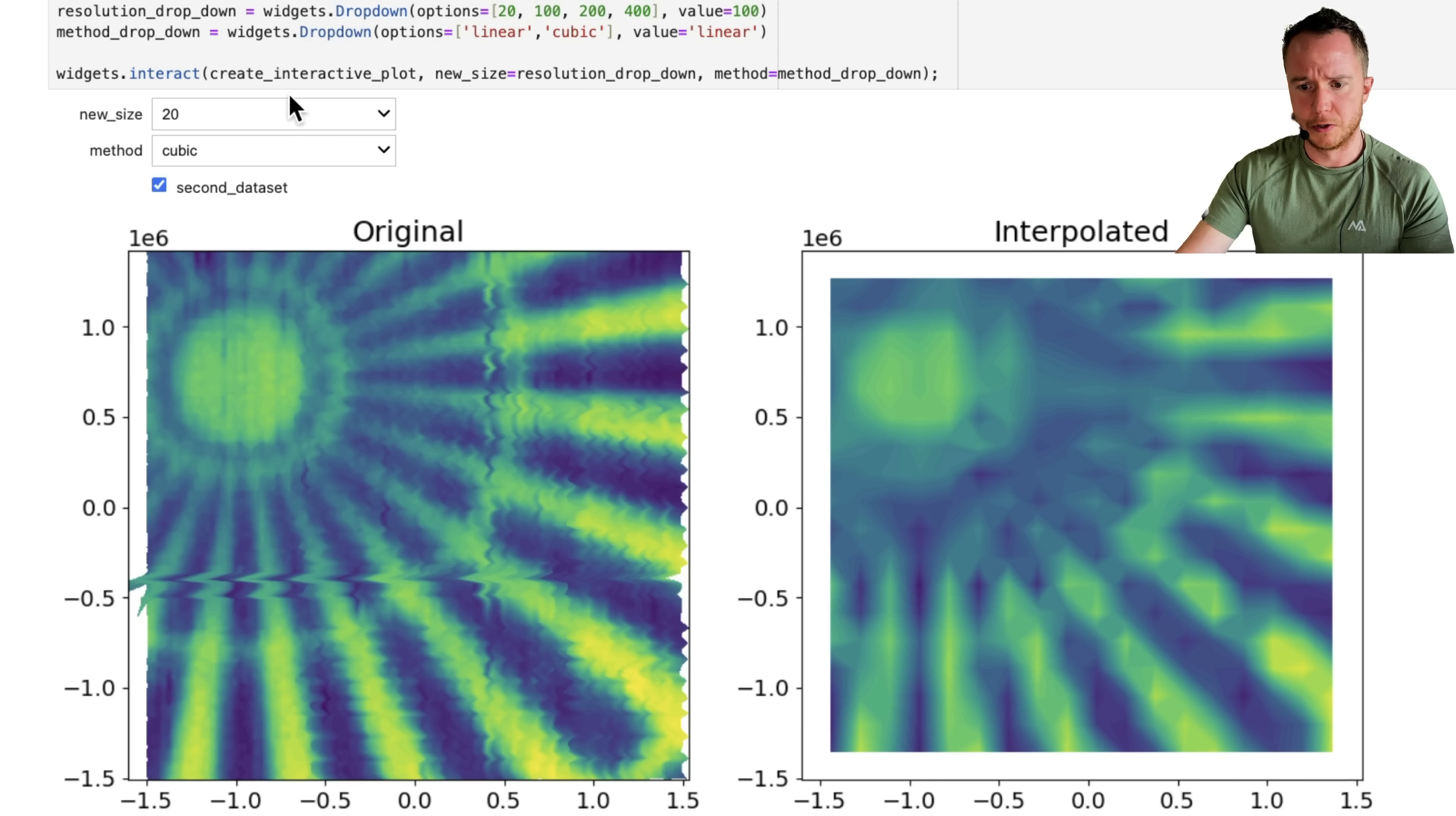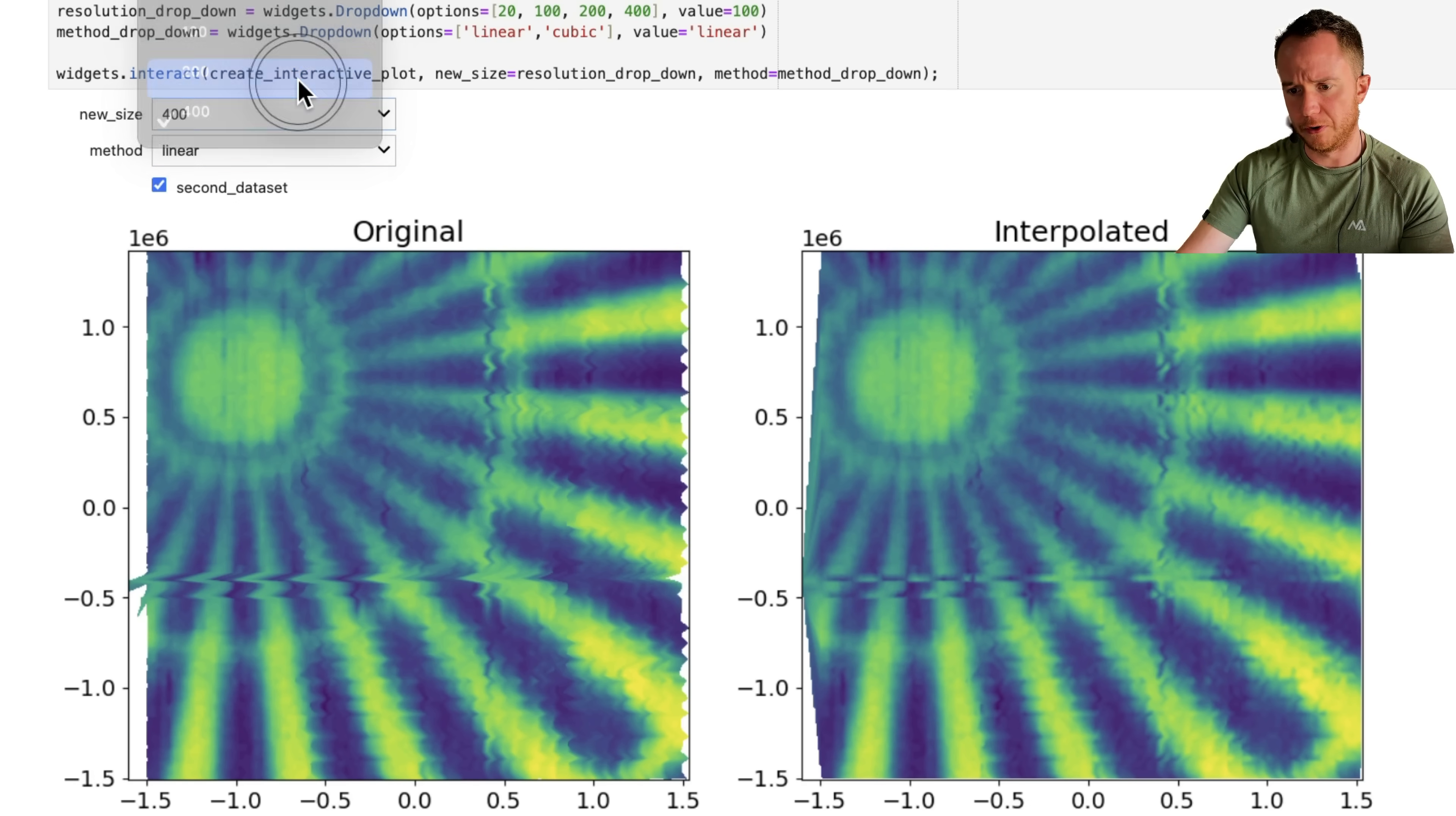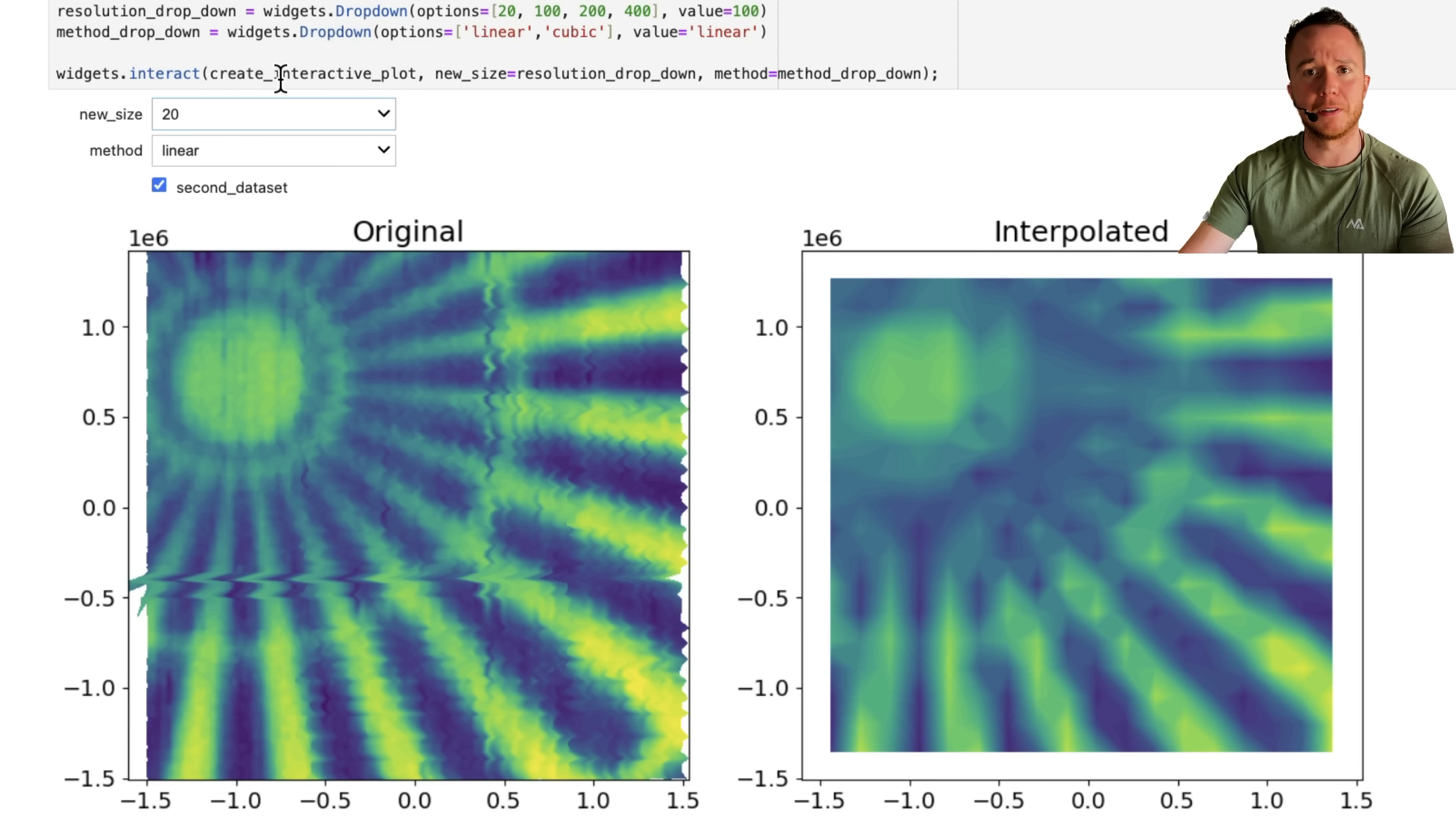Let's have a look at the second dataset. So for the second dataset, same thing. With cubic, when we go to a higher number of points, we see these artifacts here on the right, and when we switch that back to linear, these artifacts disappear. And also here, 400 to 200, not that much of a loss in quality. Going down from 200 to 100, the plot gets a little bit less crisp, and 20, yeah, it's basically not what you want to see.